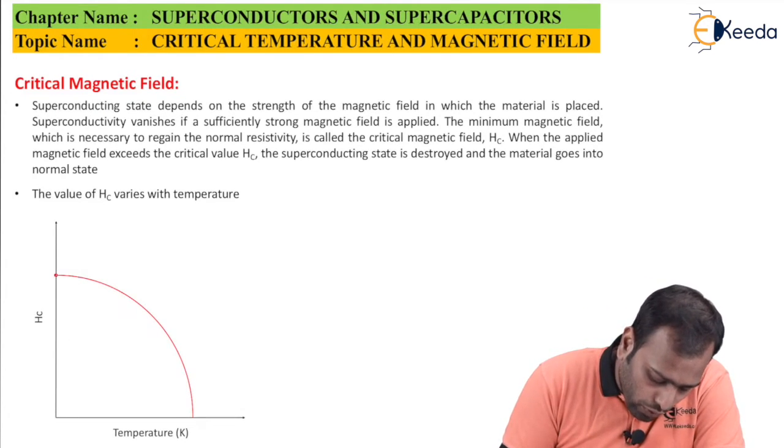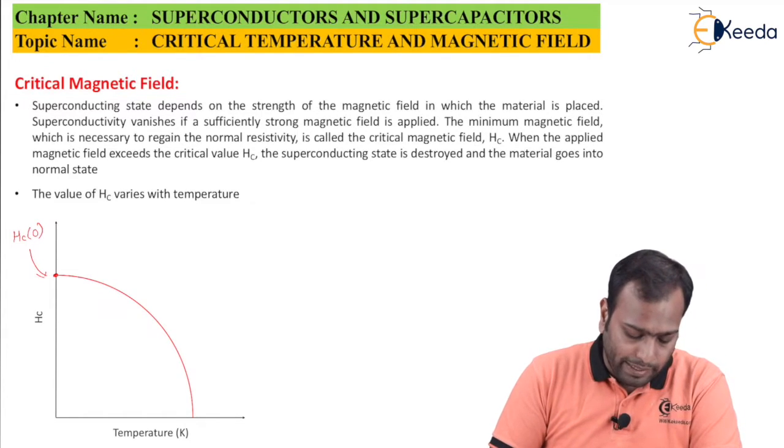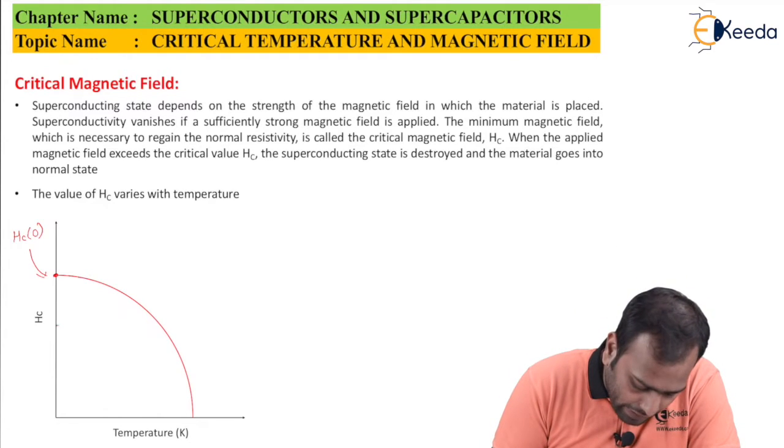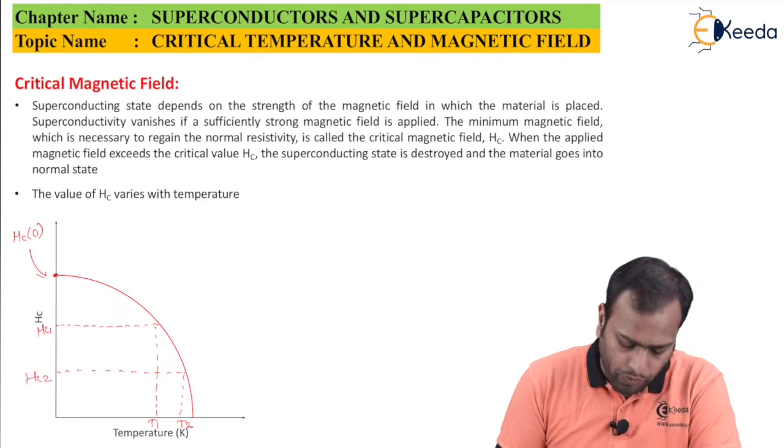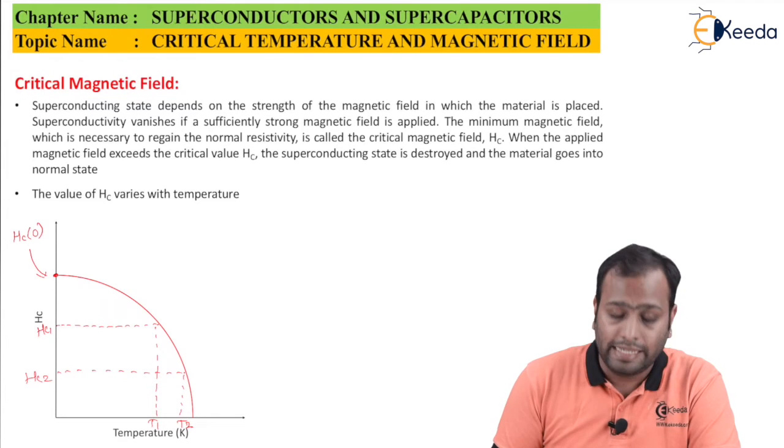So at temperature 0, you have the value here, which is denoted as HC of 0, which means the critical magnetic field at 0 Kelvin. And for every temperature, if you want to check here, for this value of HC1, you will be having a temperature value T1. For this value of HC2, your temperature value would be T2. So if you can see, as you increase the temperature, the value of HC decreases.